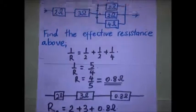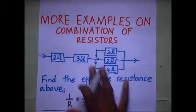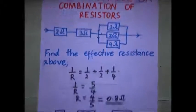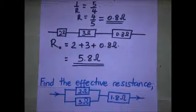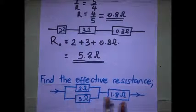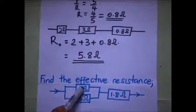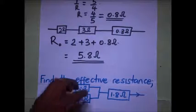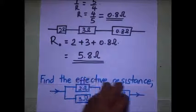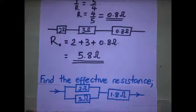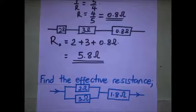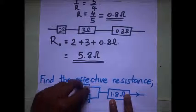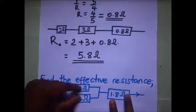Let's do one more example — find the effective resistance. We have two resistors here that are in parallel, but this parallel combination is in series with this resistor. To get the effective resistance, we need this resistance plus the effective resistance of the parallel part.